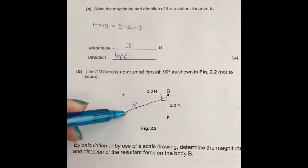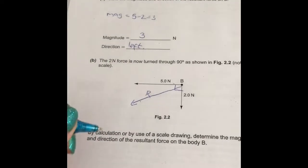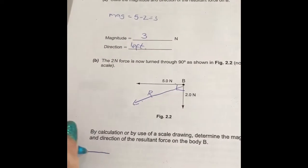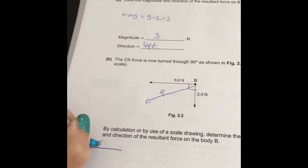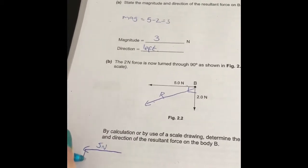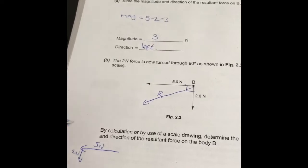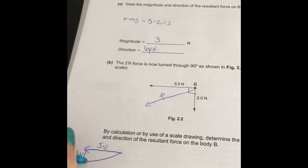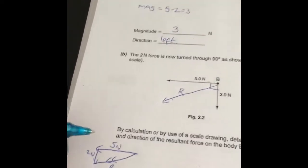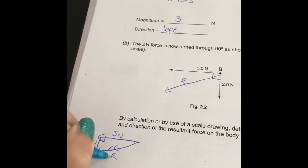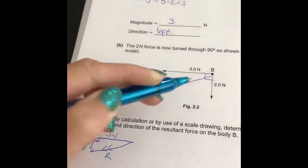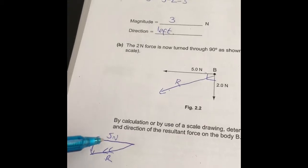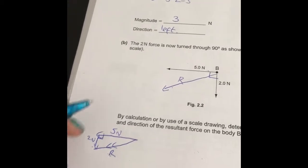So to calculate the size of this, I'm just going to draw like a closed triangle. We have 5 newtons this way, 2 newtons down. My resultant is this one here. Okay, so that's a right angle triangle, as shown here. And I'm just going to use Pythagoras to calculate r squared.